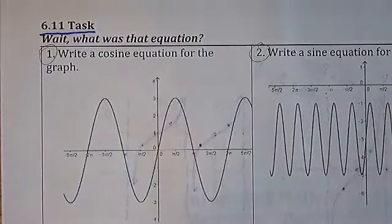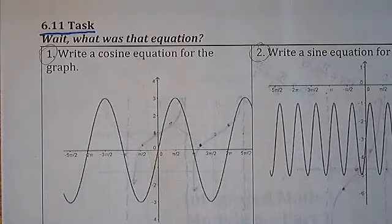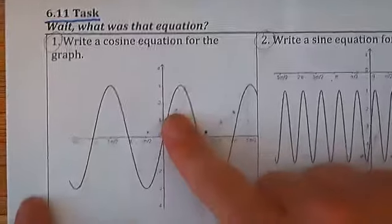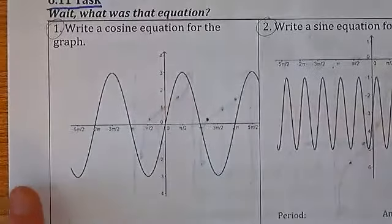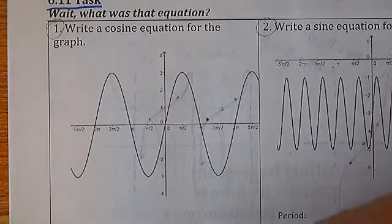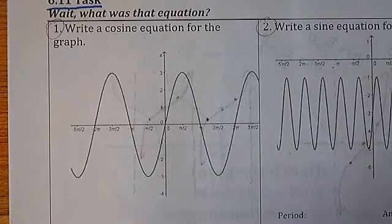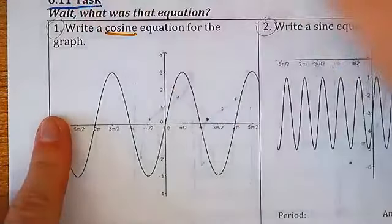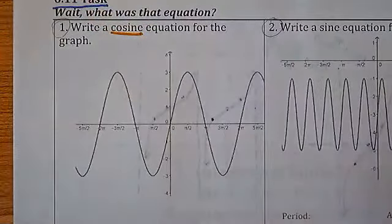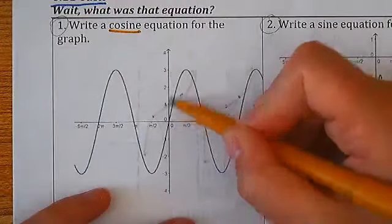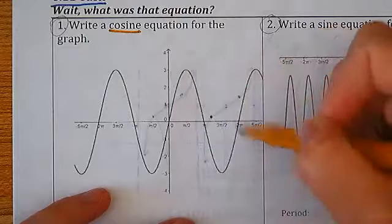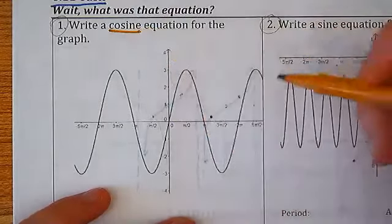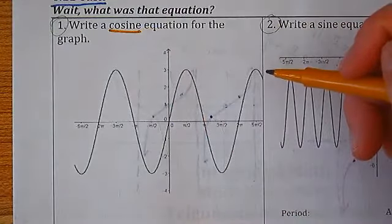Let's start with number one together. Always pay attention to what they want you to draw. This is asking for cosine, not sine. A lot of you see that it looks just like a sine graph, but they're asking for cosine — so that means there's a phase shift.